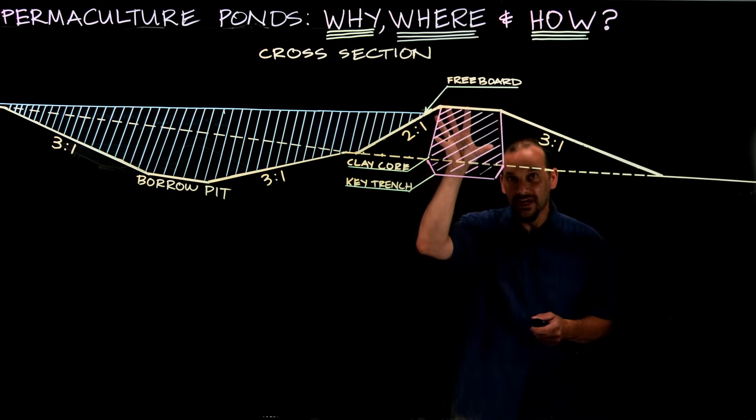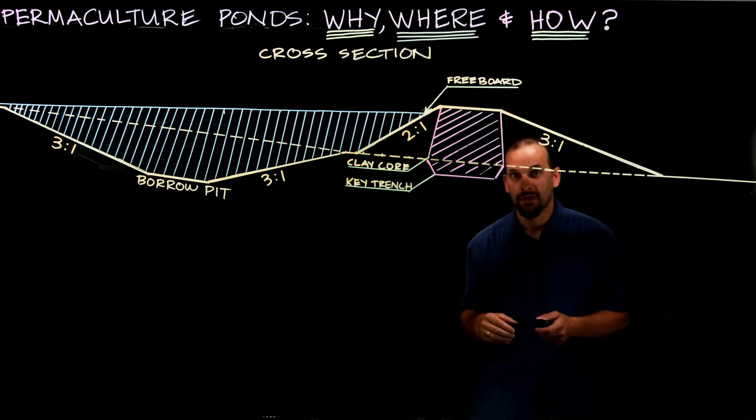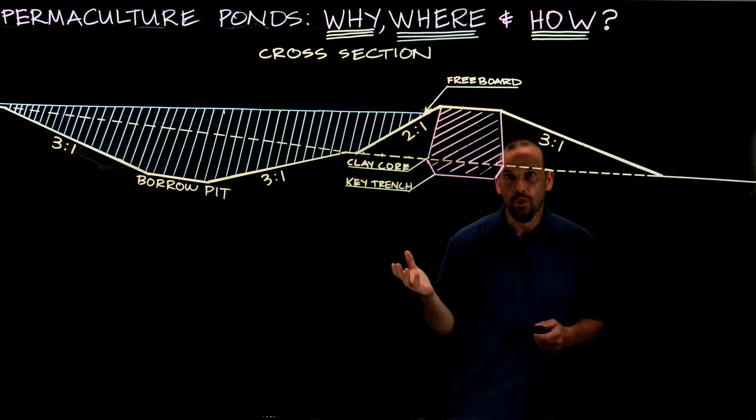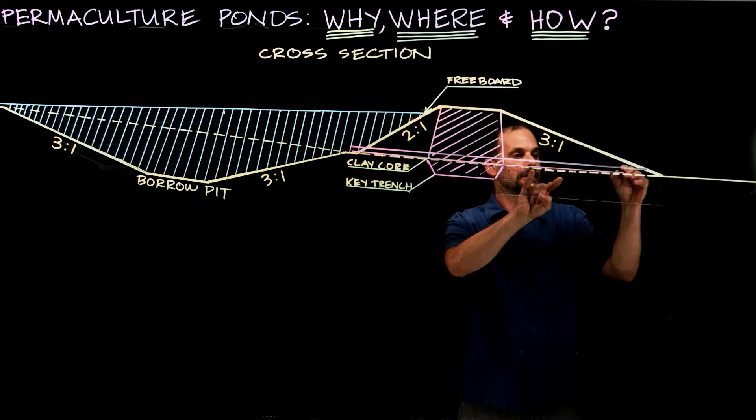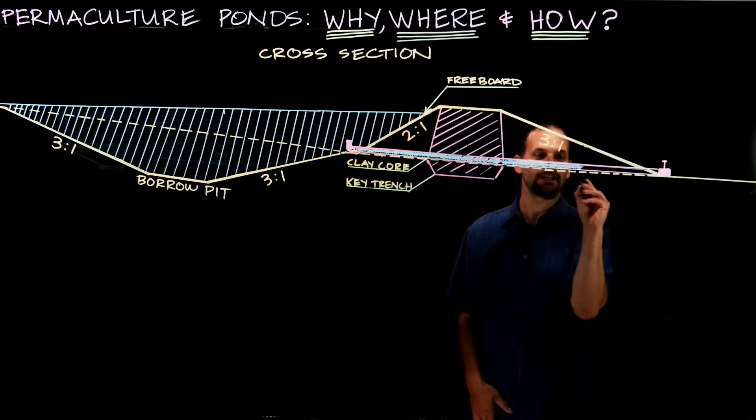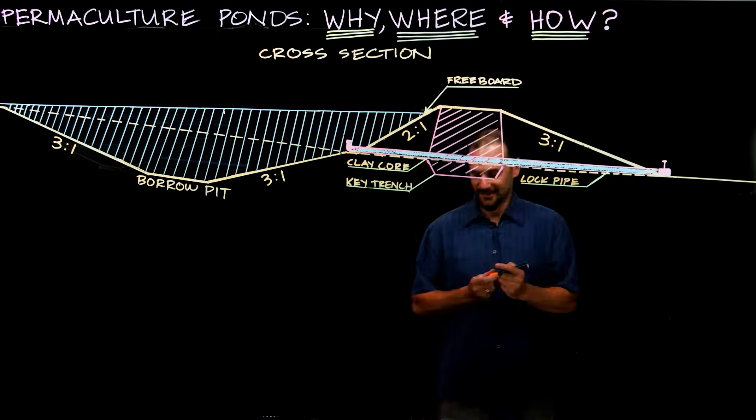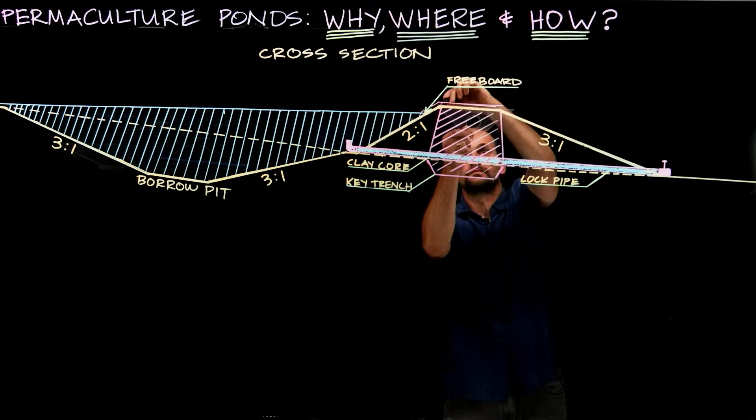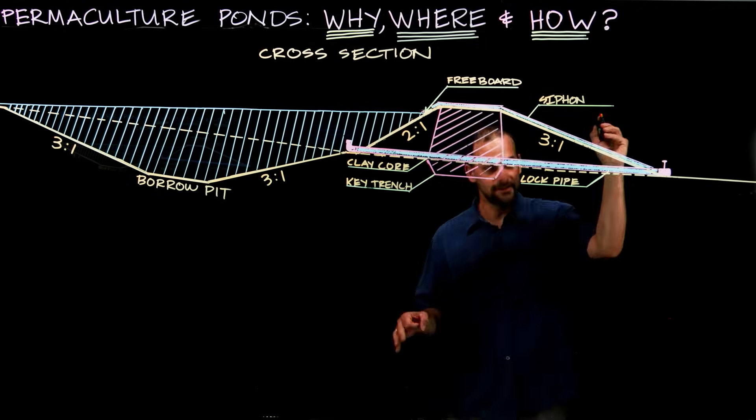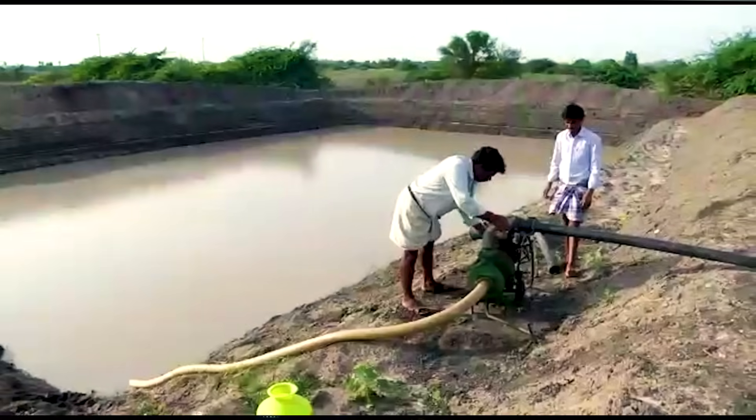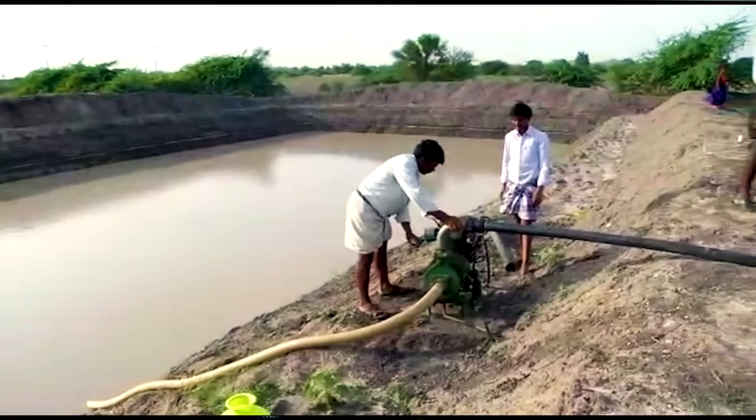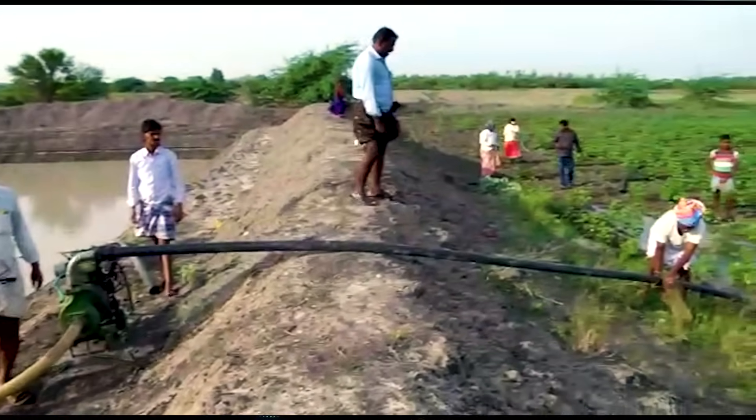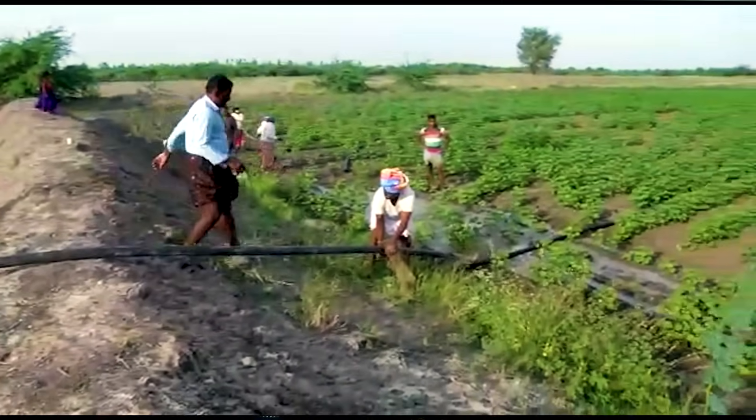Then the most typical ways that water is taken by gravity out of the pond is through a pipe that actually goes through the dam, called a lock pipe, or a siphon that's pressurized and goes over the dam. A lot of the world over, people just use gasoline pumps stuck in the water to get the water out of the ponds.